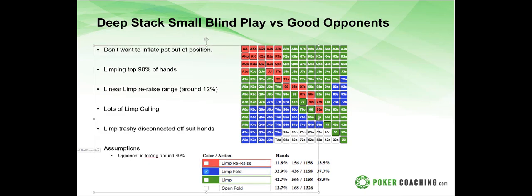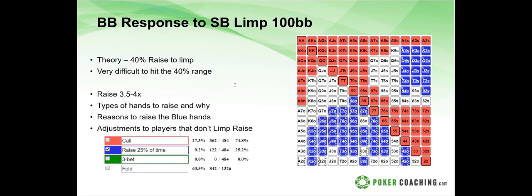Now let's look at a big blind response at an optimal level versus a small blind limp at 100 big blinds. 'Isoing' just means raising over a limp — you limp, the big blind raises to four big blinds. In theory, when you're in the big blind, you want to be raising versus a limp about 40 percent of the time. I want people to realize how tight most players are when iso-raising from the big blind — they check back way too often against a small blind limp.